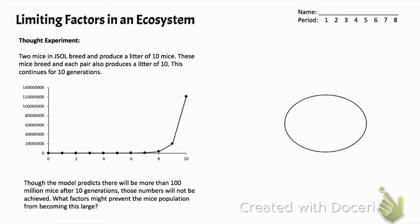Let's begin with a thought experiment. Two mice in JSOL (Janesville School Outdoor Lab) breed and produce a litter of 10 mice. These mice breed and each pair also produces a litter of 10. This continues for 10 generations and produces the graph we see below.